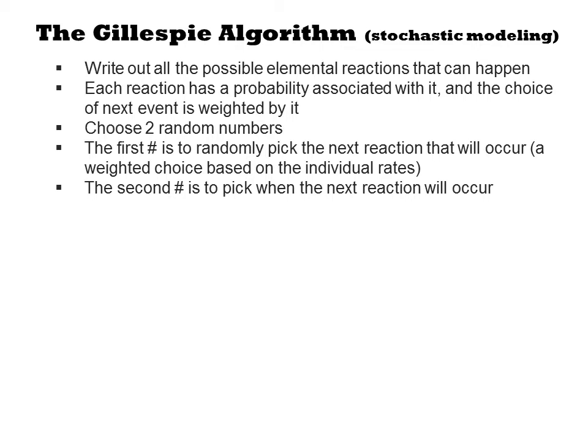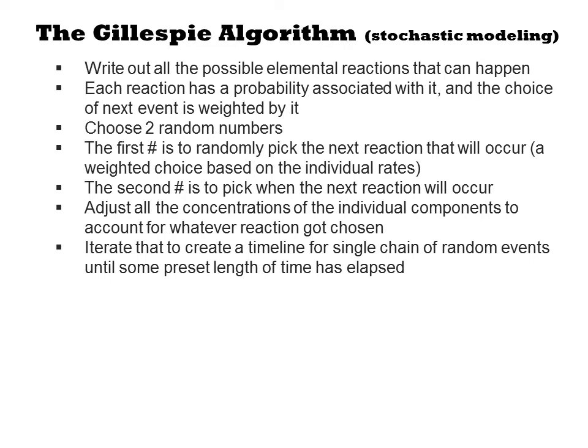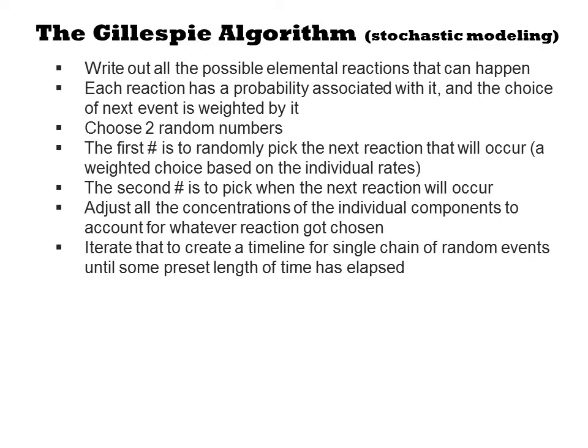The second number is used to pick when the next reaction will occur. After it has chosen its reaction, the algorithm adjusts all the concentrations of the individual components to account for whatever reaction took place. This process of reaction choosing and updating is iterated to create a timeline for a single chain of random events until some preset length of time has elapsed.